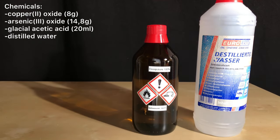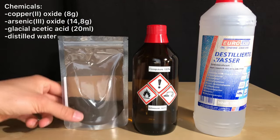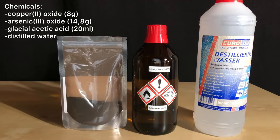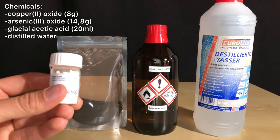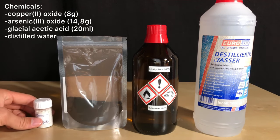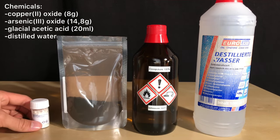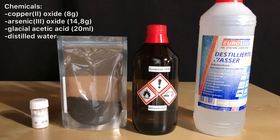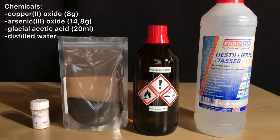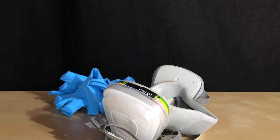For this preparation, distilled water, 14.8 grams of arsenic 3 oxide, 8 grams of copper 2 oxide, and 20 milliliters of glacial acetic acid were used. The amount of glacial acetic acid used was a huge overkill. Instead of copper 2 oxide and glacial acetic acid, or acetic acid in general, copper 2 acetate could be used directly.